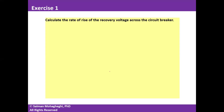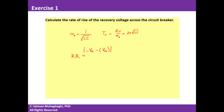The frequency of oscillation between the inductor and capacitor is ω₀ = 1 / √(LC), so the period of oscillation is T₀ = 2π√(LC). The rate of rise is 2·V_M divided by T₀/2, which equals 2·V_M / (π√(LC)). If this is higher than the dielectric strength of the circuit breaker, you're going to have a re-strike.